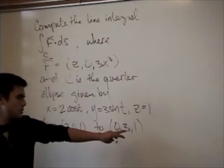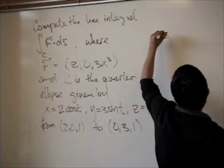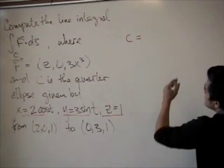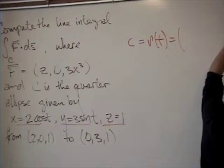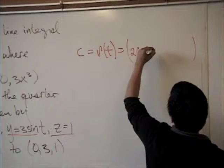Okay. First, we want to convert our C into a parameterization, which is given already, which is x, y, and z. So this is your parameterization, and then you can just put it in a vector, which will be two cosine of t, three sine of t, and one.